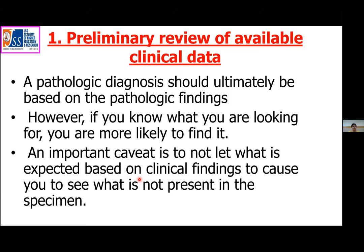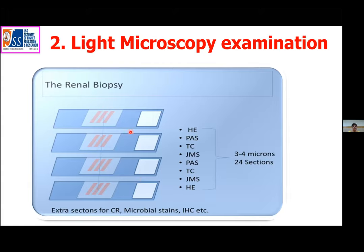We take serial sections and lay them on 10 slides, each with three to four sections. The first and eighth sections are stained with H&E, second and fifth with PAS stain, third and sixth with trichrome, and fourth and seventh by Jones Methenamine Silver. The ninth and tenth slides are kept for microbial stains, Congo red, or any other special stains.